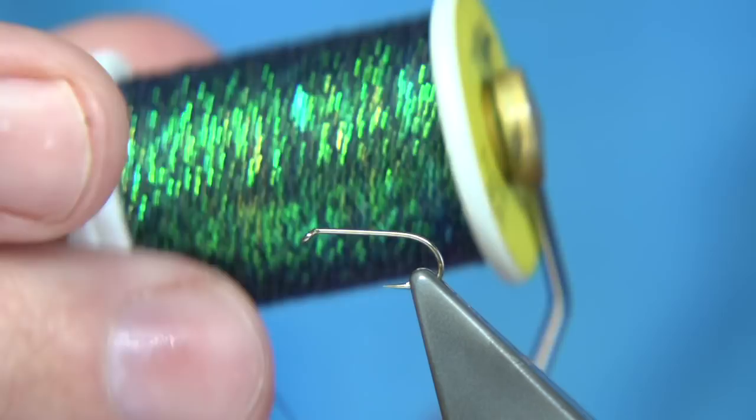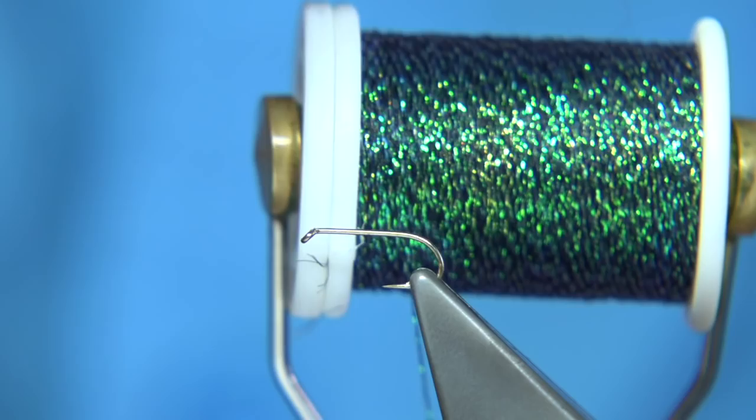And then you've got the peacock, which is the one I'm going to use, which is a pearl flash with a black thread, which protects the flash.